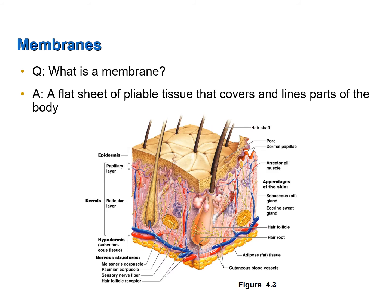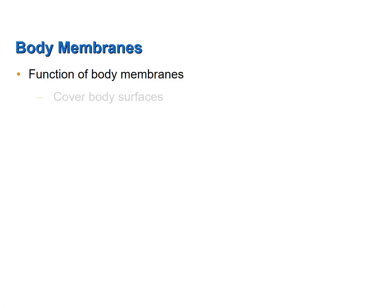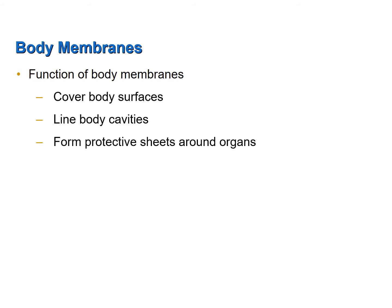The membrane you are probably most familiar with is your skin, or cutaneous membrane. The functions of membranes are as follows: some membranes cover the body surfaces — for example, the cutaneous membrane is your skin. Other membranes line the body cavities, some of which open to the external environment, such as the digestive or respiratory tract, while others are closed, such as the thoracic or abdominopelvic cavity. Membranes also form protective sheets around organs such as the stomach, large intestine, kidneys, or heart.